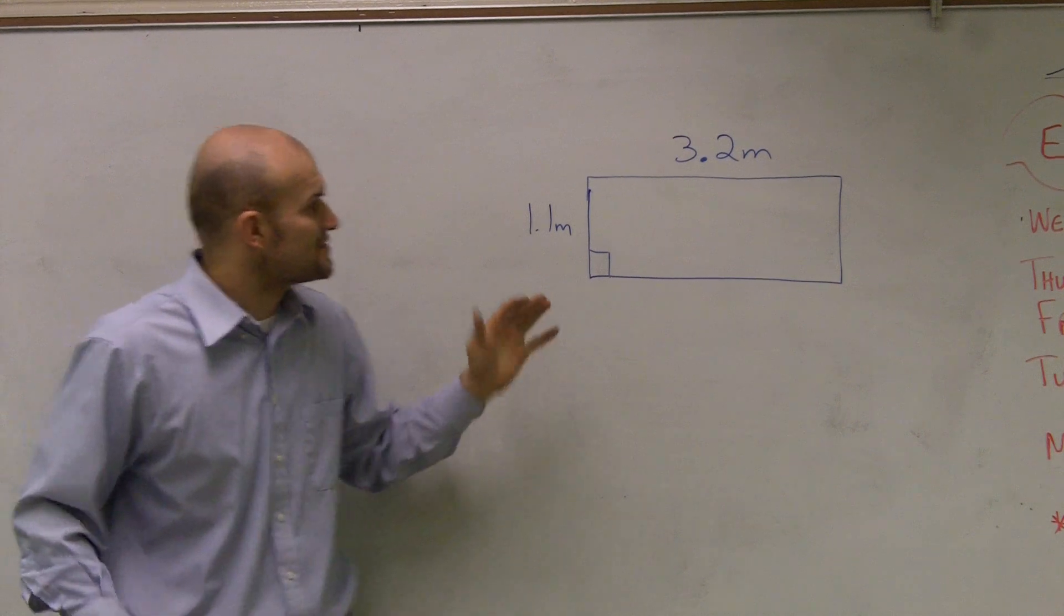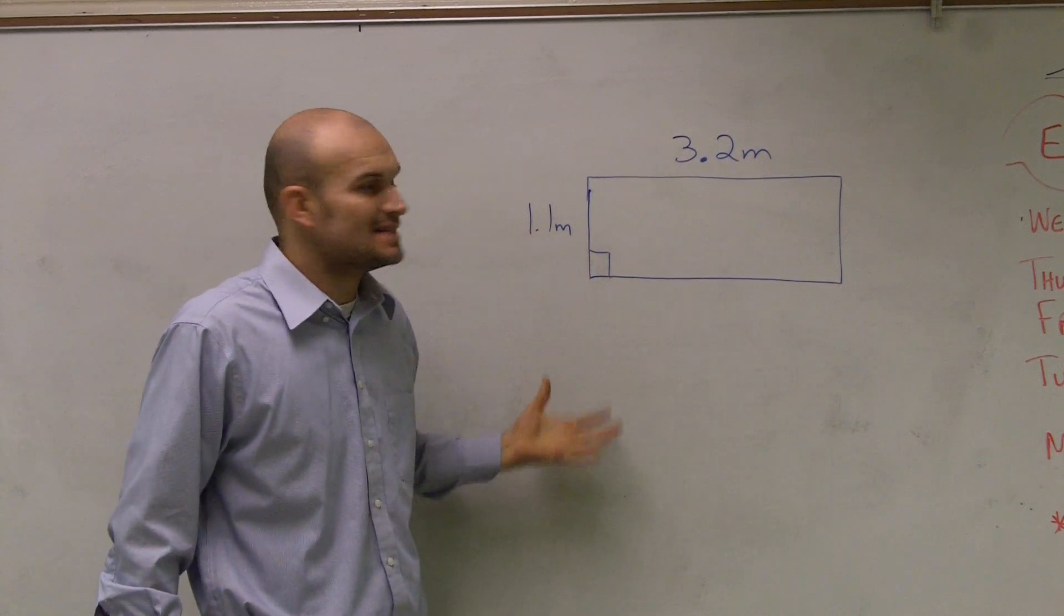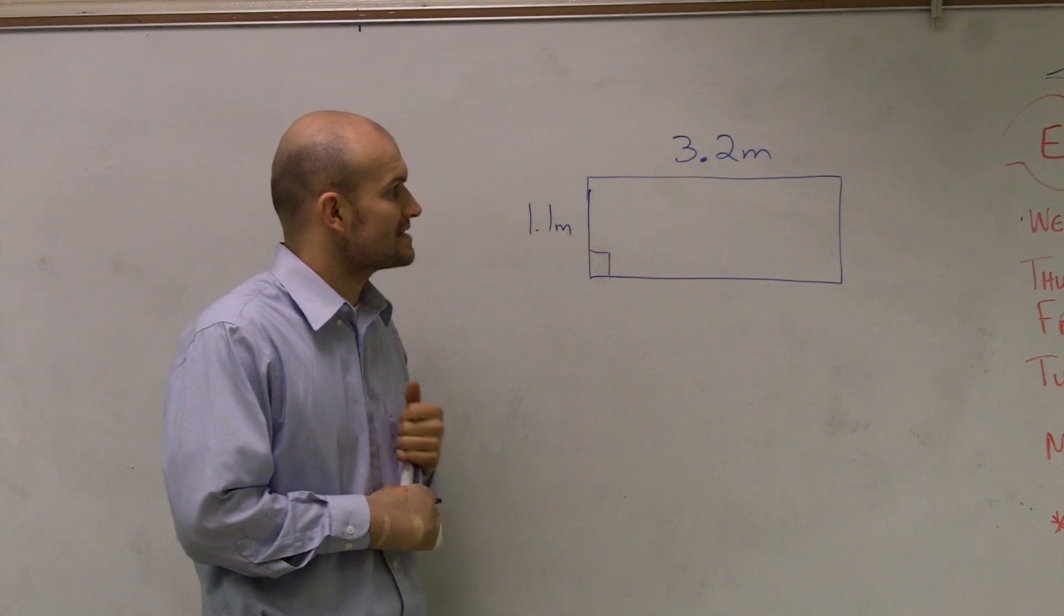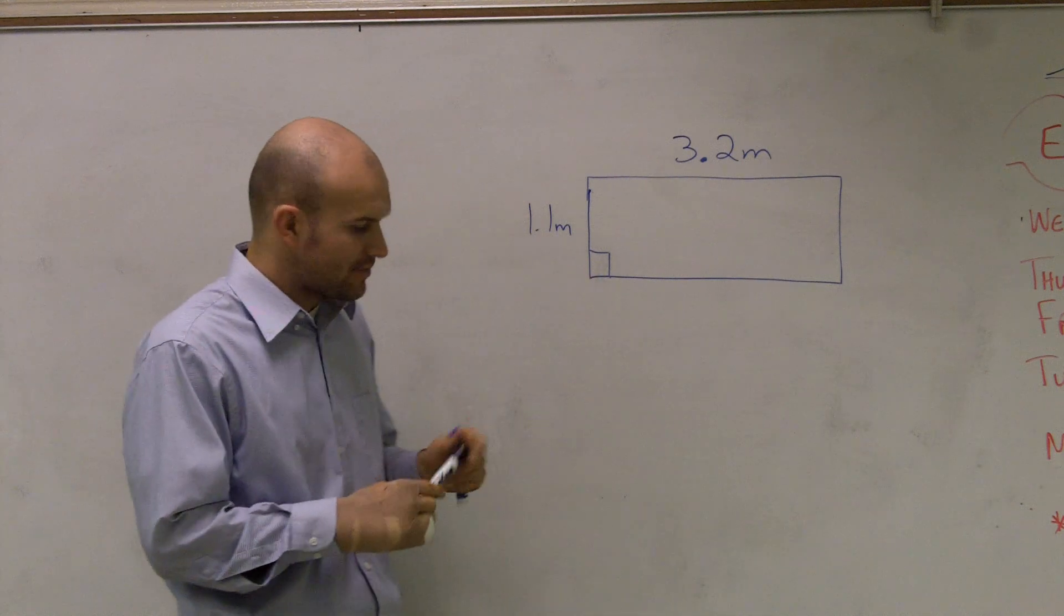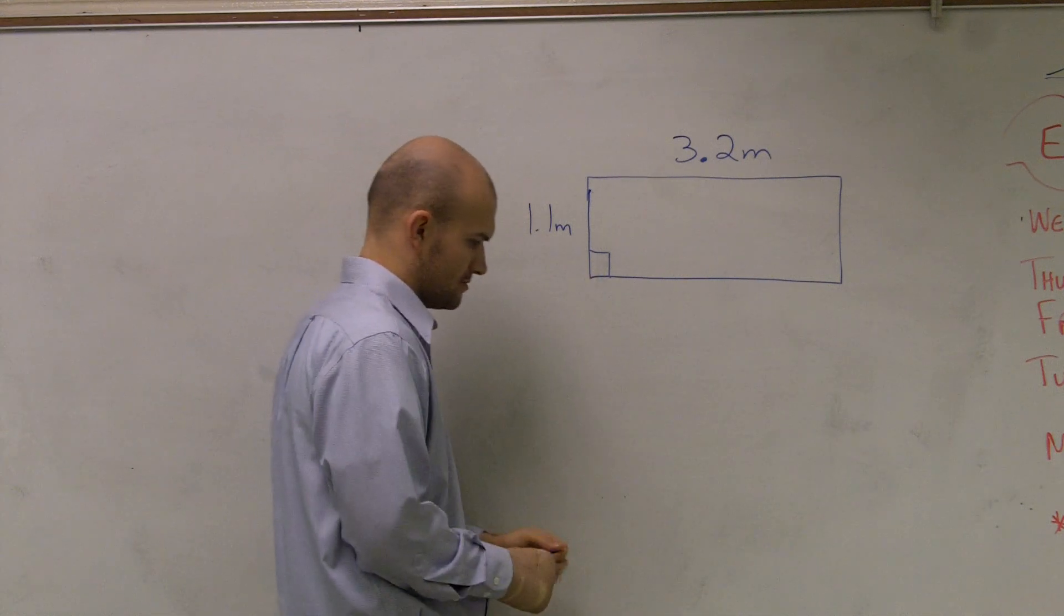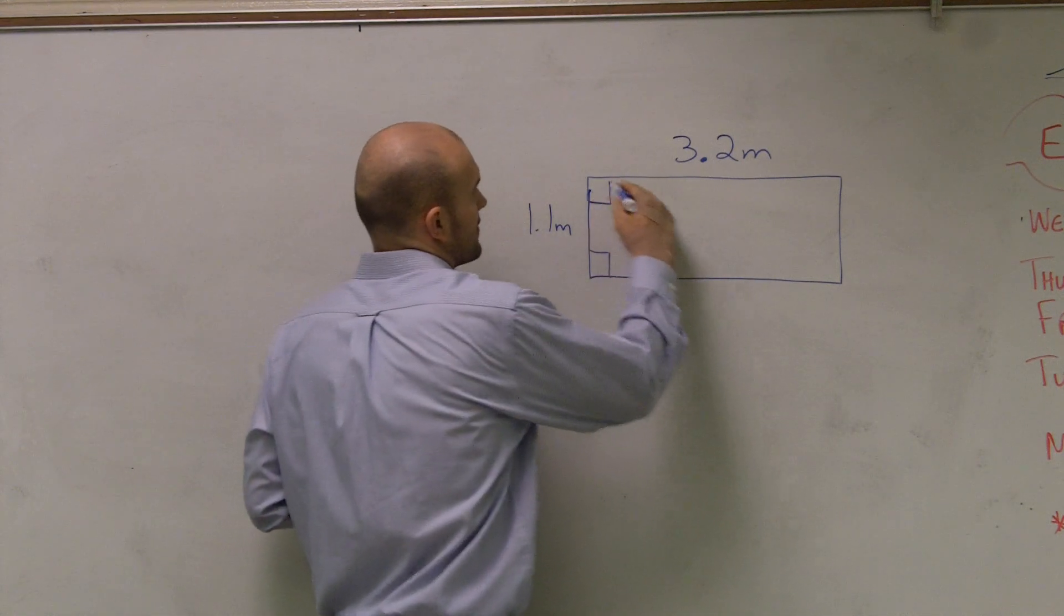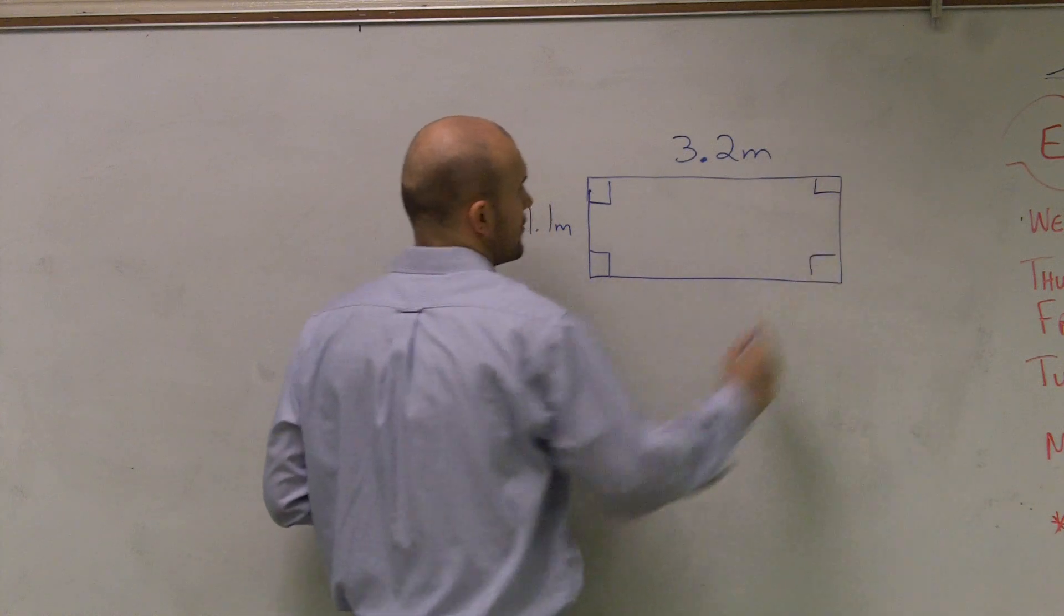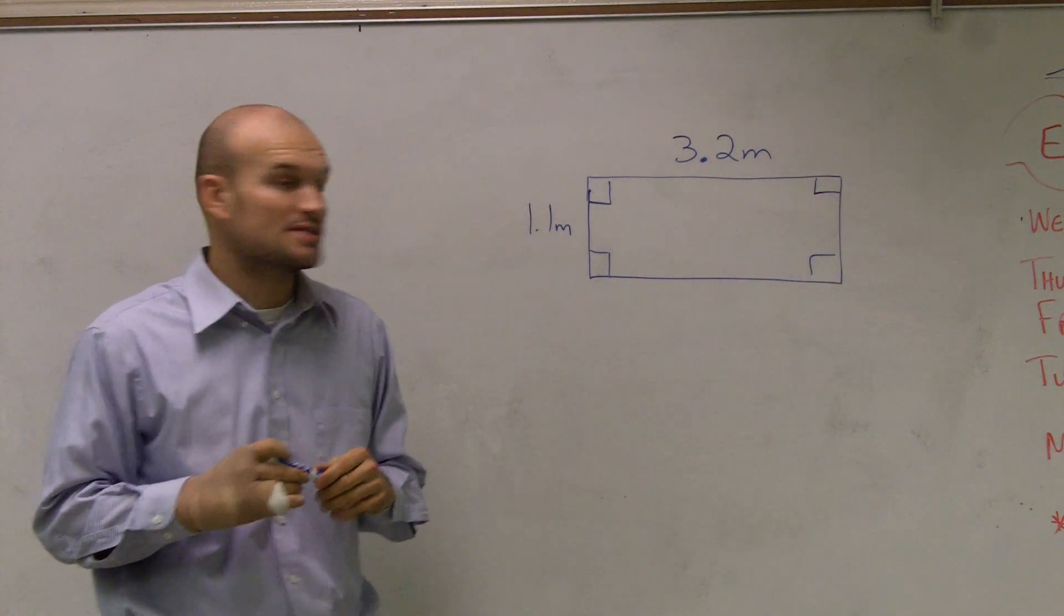OK, what I like to do is show you how to find the perimeter and the area of a rectangle. So we notice that this is a rectangle. We're going to have four right angles. So we know this is a rectangle.